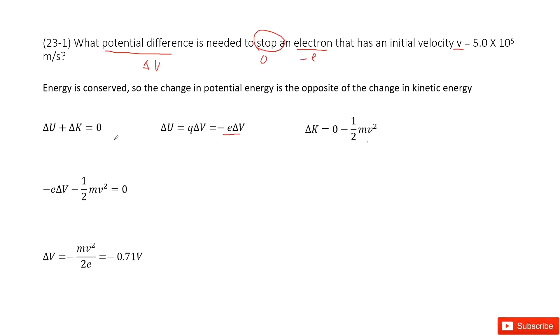Now we use delta U plus delta K equals zero. Energy is conserved. Then we input delta U and delta K inside, we get a function like this one. Then we can convert it to a function for delta V. In this function, the mass is the mass of the electron, e is the charge for electron, and v is given. So you can get the final answer. Thank you.